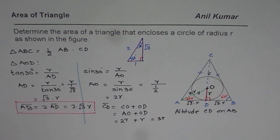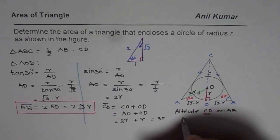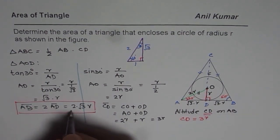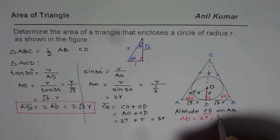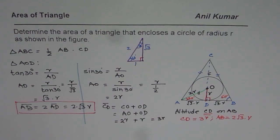So we get both the things. So altitude CD here, let me write down in red now. CD is equals to 3 times R, and AB we found as AB is equals to 2 times square root 3 times R. So we get both the things.